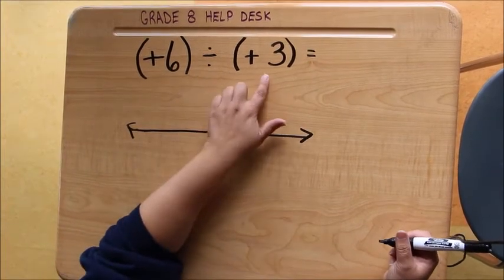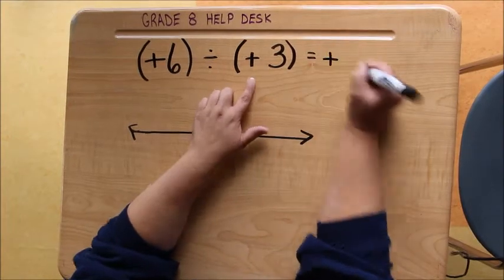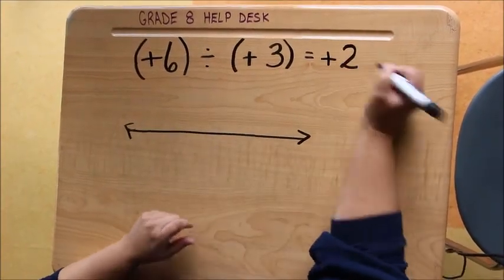So we have positive 6 divided by positive 3. And we know when the signs are the same that our quotient will be positive. And 6 divided by 3 is 2.